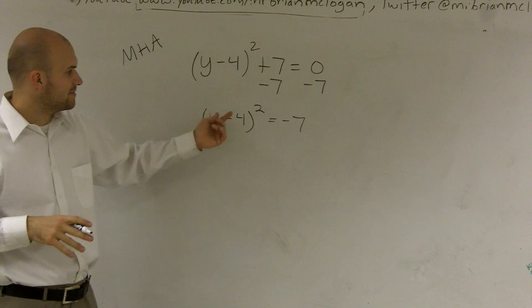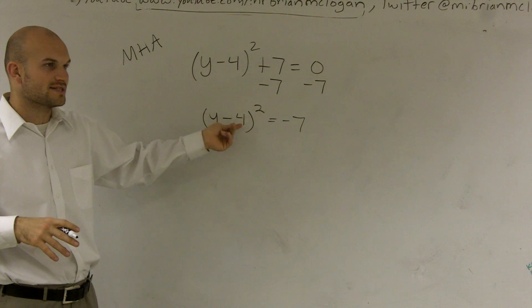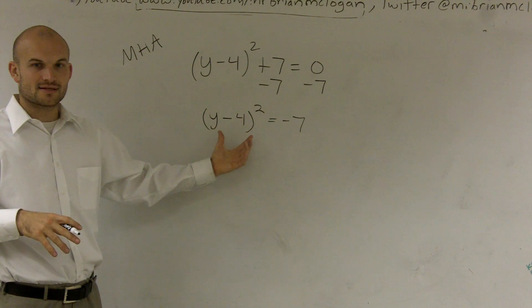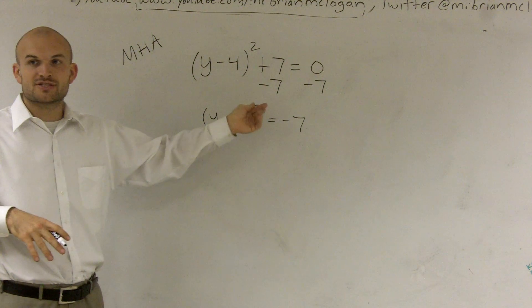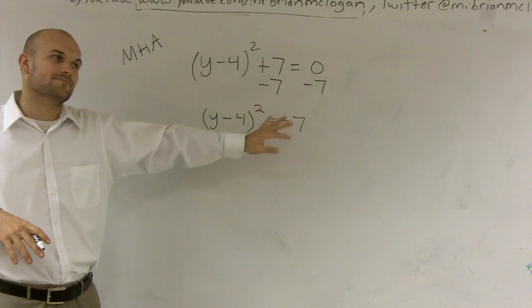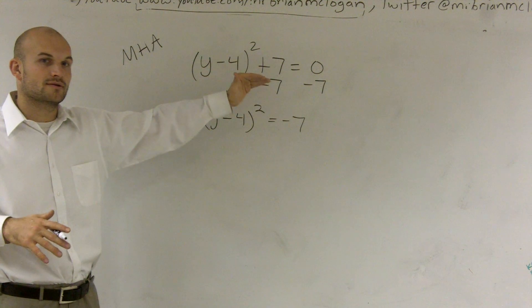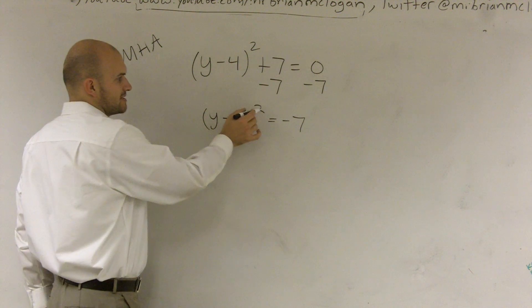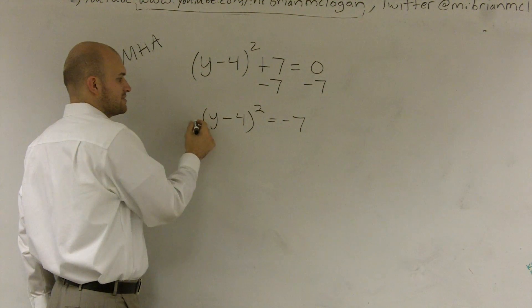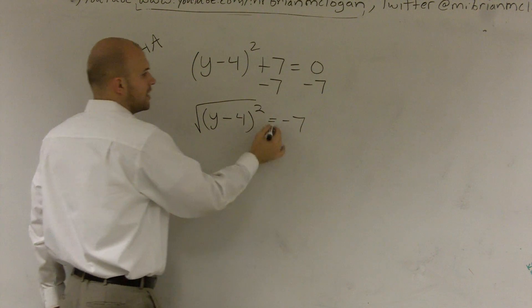Well now, before I can get rid of this 4 inside of there, that's inside the parentheses, I have to get rid of my power. To get rid of this power, I need to take the square root of it. Since I'm squaring this 2, I need to take the square root of both sides.